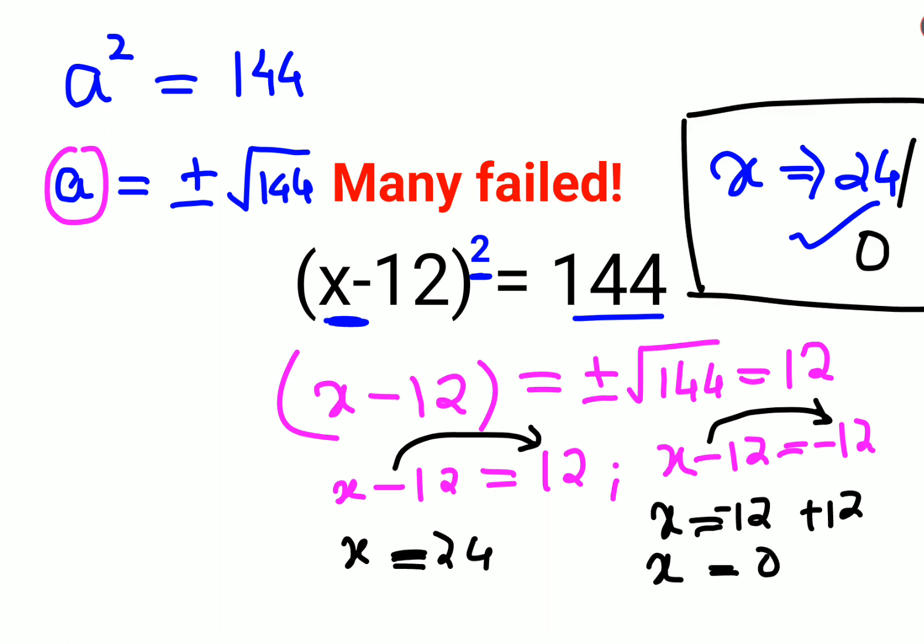These are the two values for x. Now let's put them in the original equation. If I put x as 24, then 24 minus 12 whole square gives you 12 squared, which is 144.